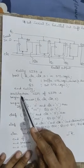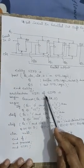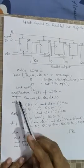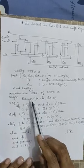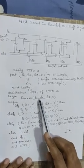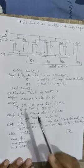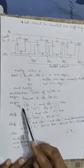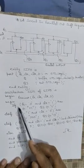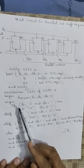Next is the architecture, architecture name of architecture of binding entity is begin, then process and in the process we are having preset, clear, clock and D. Then begin. Again as we have done in case of serial in serial out shift register and parallel in parallel out shift register.